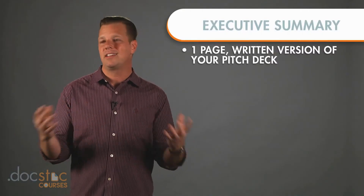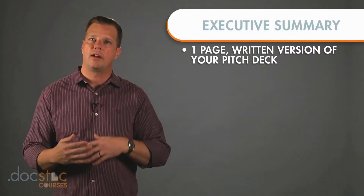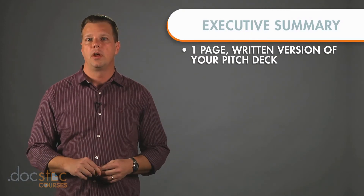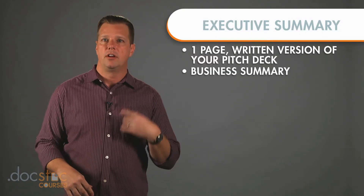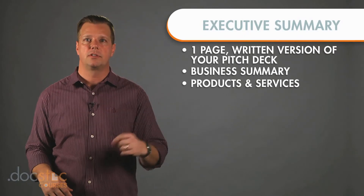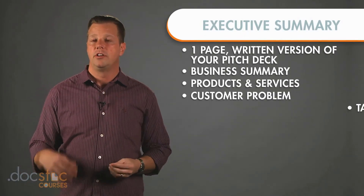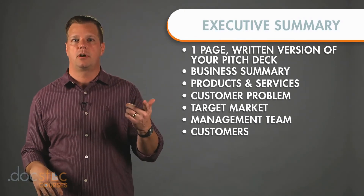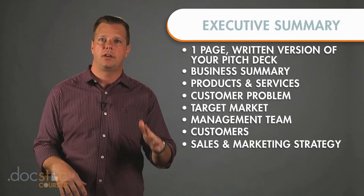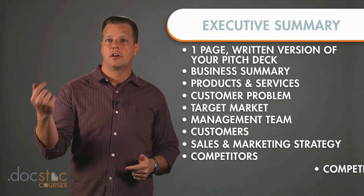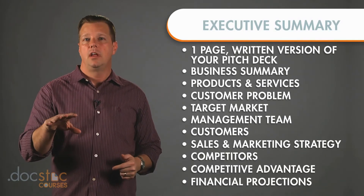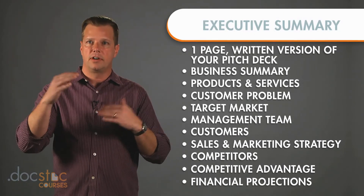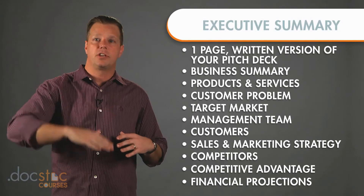What is included in the exec summary — even though I really recommend you use the Gust structure and online form to do it — you're going to have your business summary, your products and services, the customer problem, your target market, your management team, who your customers are, your sales and marketing strategy, your competitors, your competitive advantage, and financial projections. Each one of these is generally just one paragraph or a few lines, so you narrow it down into written form.